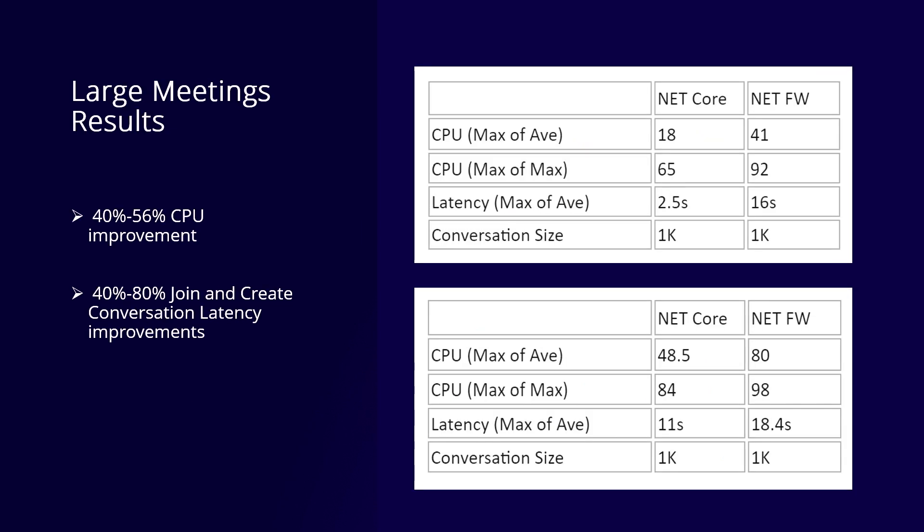The improvements didn't stop there. For large meetings, we were investigating bottlenecks where thousands of join requests come in when a meeting starts, which was causing bottlenecks. With the .NET Core migration, we saw impressive results: 40 to 56% CPU improvements for 1,000-participant meetings. We also observed 40 to 80% join and create conversation latency improvements — which was huge.